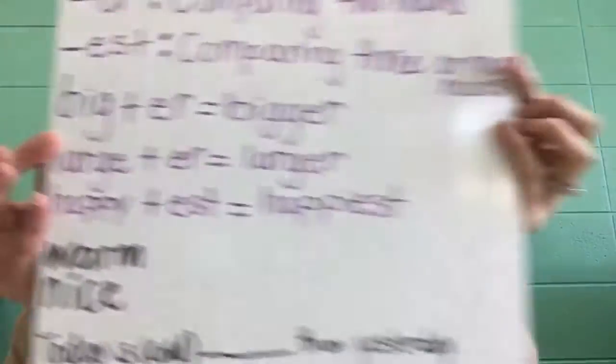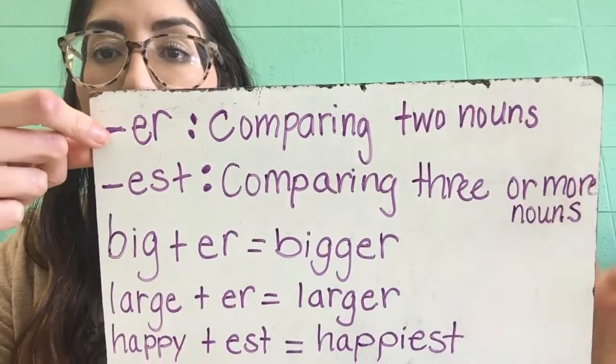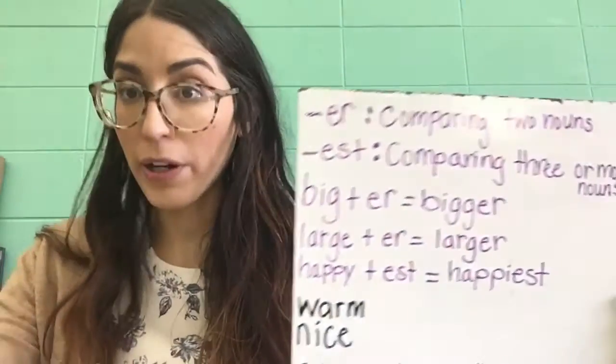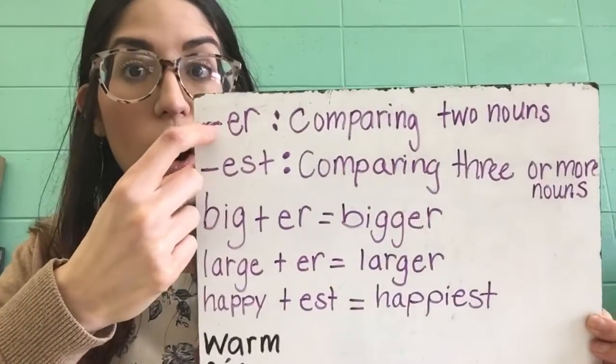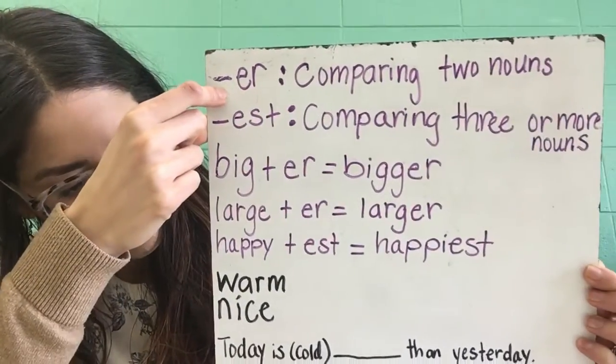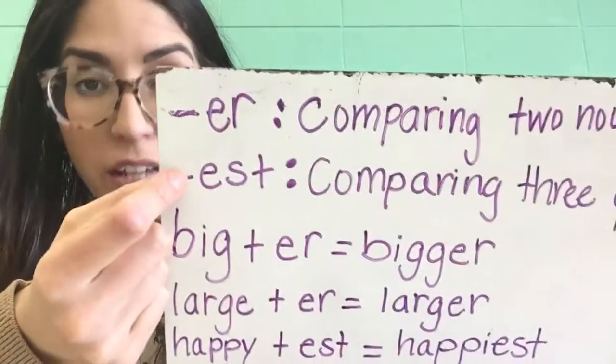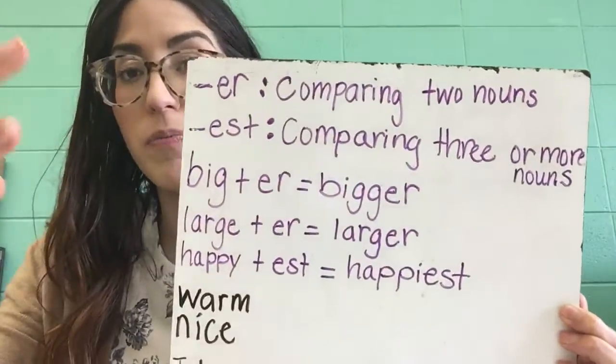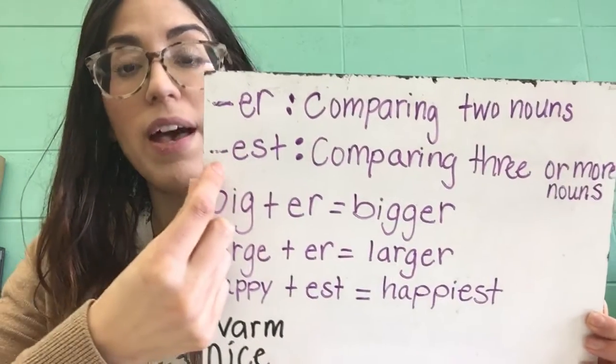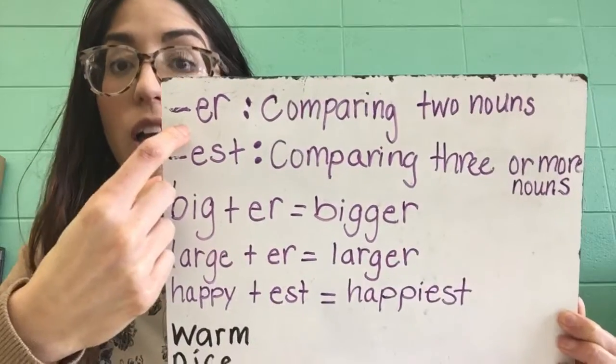We're talking about adding the suffixes -er or -est. We're going to add -er when we compare two nouns. We're going to add the -est suffix if we're comparing three or more nouns. So -est is for three or more nouns, and -er is when we only compare two nouns. That's the difference between the two.